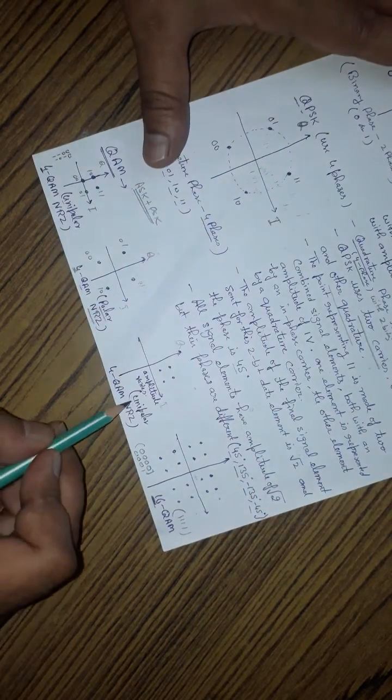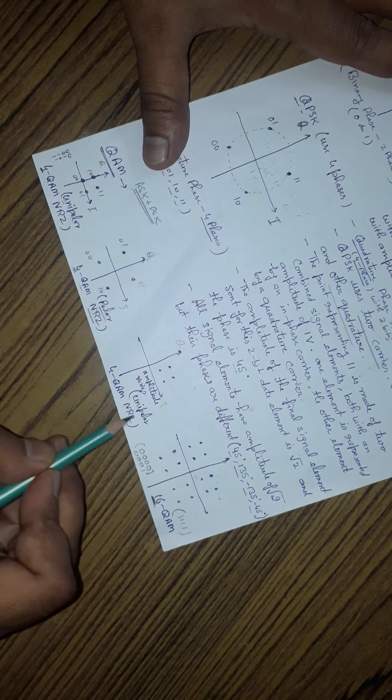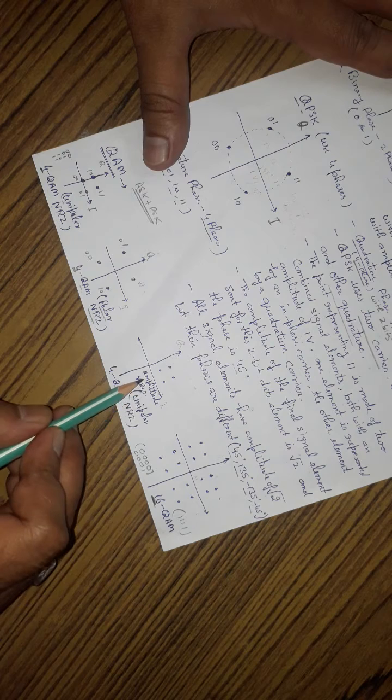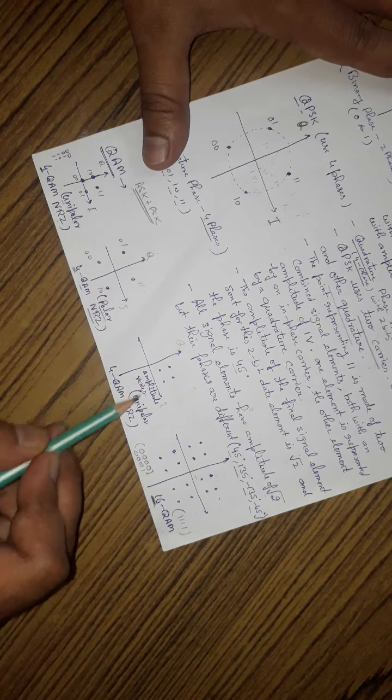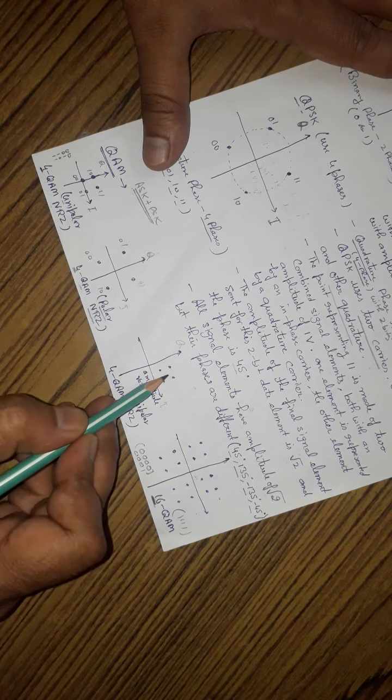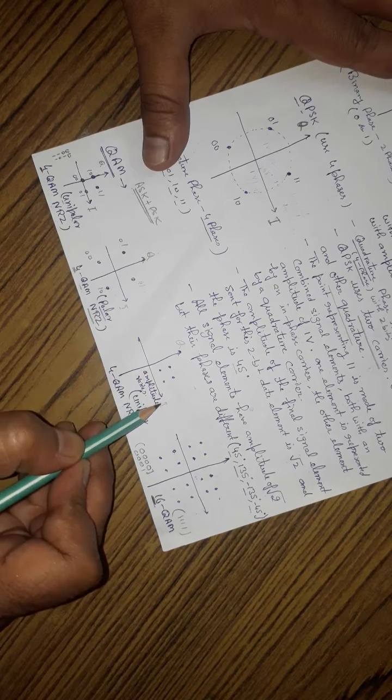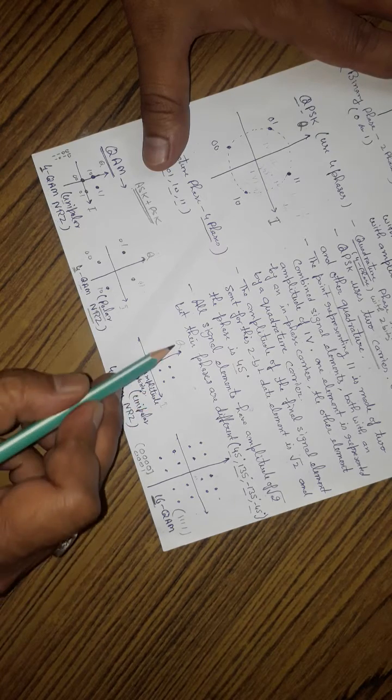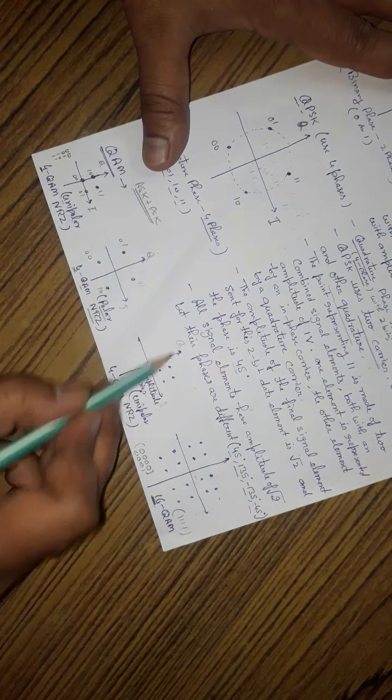Next one is 4QAM unipolar non-return to zero. It is just similar to this one, but the difference is amplitude varies. As it has variation in amplitude, this one will shift somewhat in the positive plane of in-phase and quadrature phase.